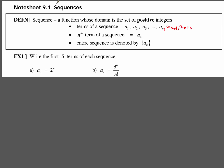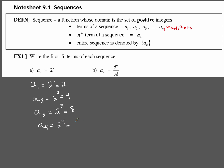Writing the first five terms of the sequence — this is pretty straightforward. Our term a sub n is 2 to some power. For our first term, we plug in 1 wherever there's an n, so 2 to the first power is just 2. a sub 2 is 2 to the second power, which is 4. a sub 3 is 2 to the third power, which is 8. a sub 4 is 2 to the fourth power, which is 16, and our fifth term is 2 to the fifth, which is 32.